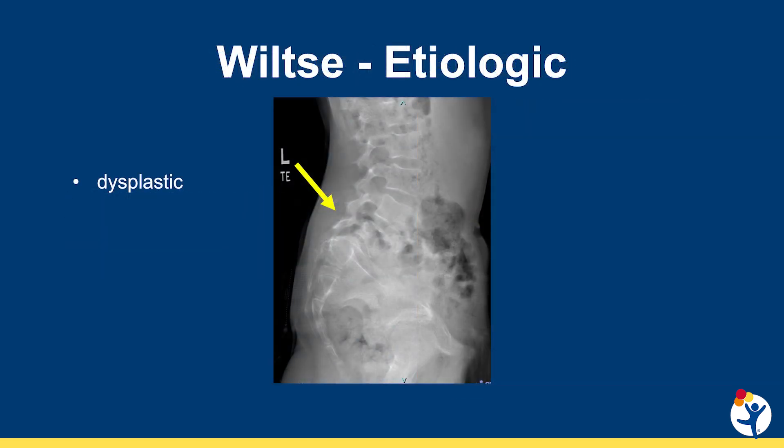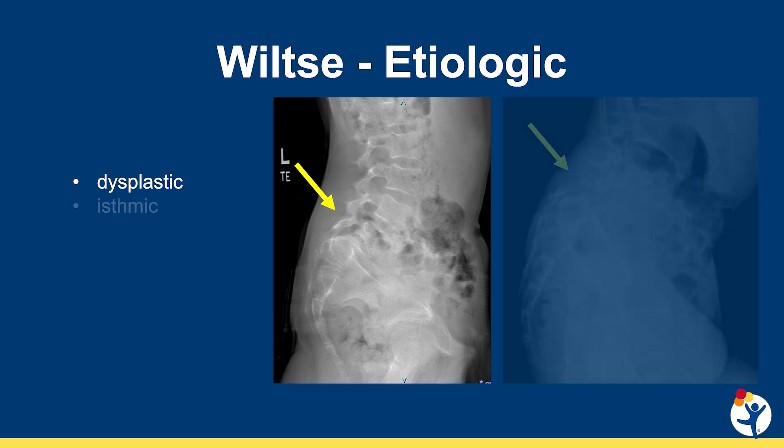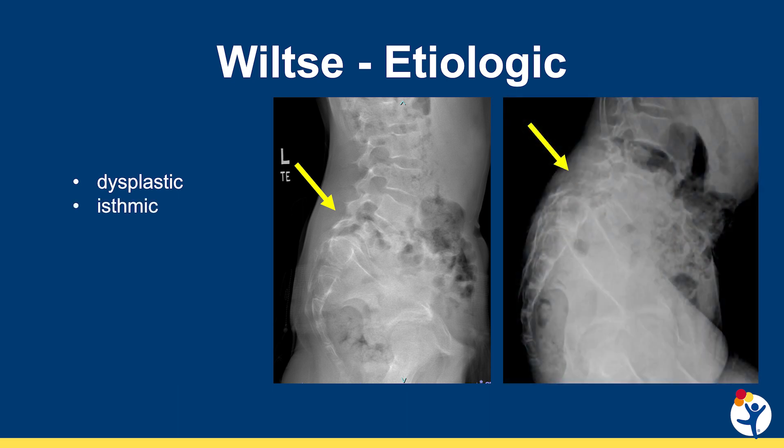The Wiltse classification is the most common etiologic classification utilized for spondylolisthesis. The dysplastic type is where there is an elongated and more horizontally oriented posterior elements at L5, as seen on this x-ray. The isthmic type, which is probably the most common in adolescence, is seen on the image on the right, where there is a stress fracture and gap of the L5 pars bilaterally.